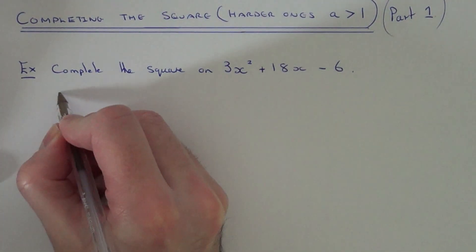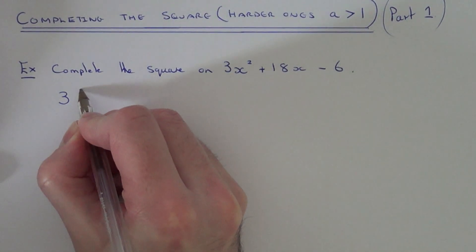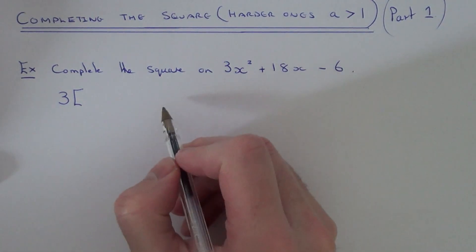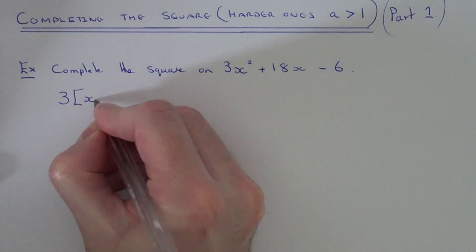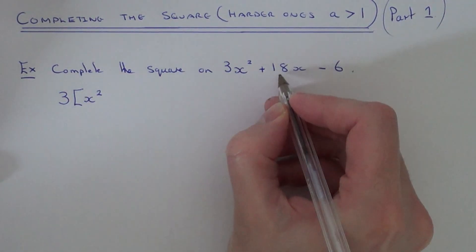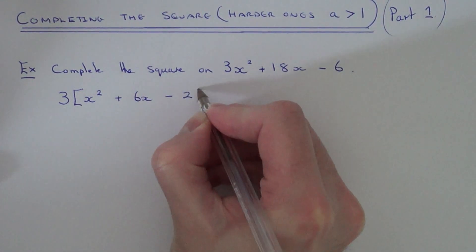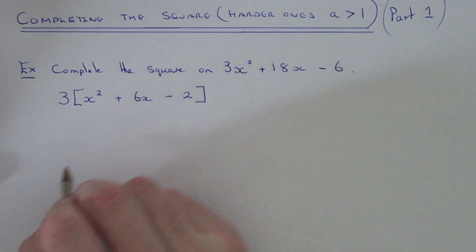So I'm just going to take the 3 out and divide this quadratic all by 3. So I'm going to have x squared plus 6x minus 2. So basically just put that into a single bracket.